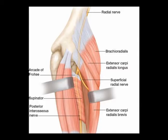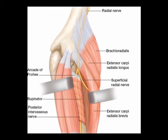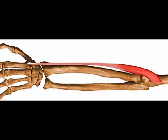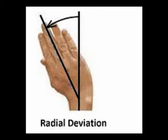The innervation is the radial nerve from vertebral levels C6 and C7. And again, the concentric actions of the extensor carpi radialis longus muscle are wrist extension and radial deviation.